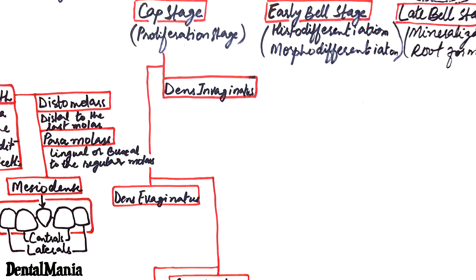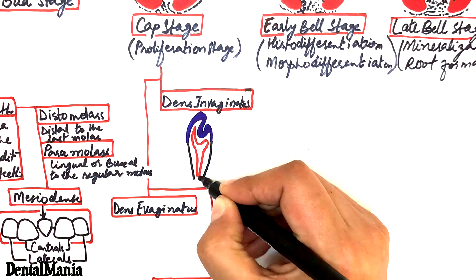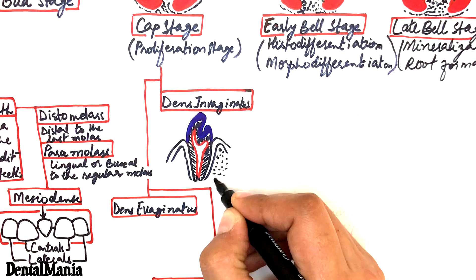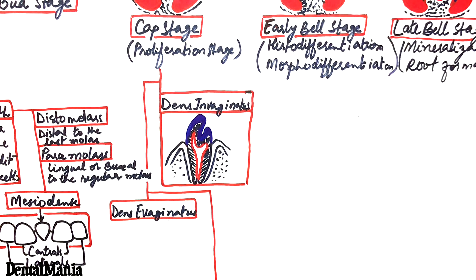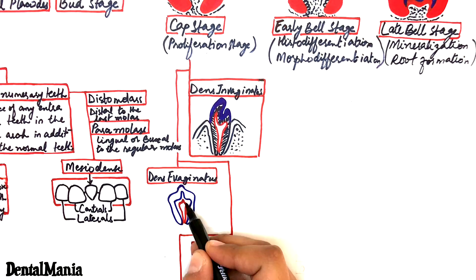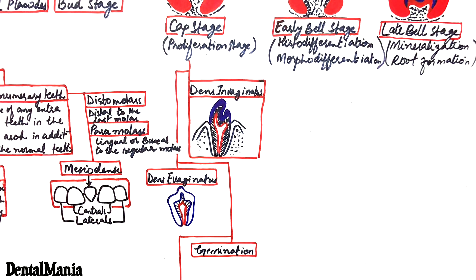The dens invaginatus or dens in dente refers to the presence of a tooth within a tooth. It occurs as a result of infolding or invagination of the enamel organ into the dental papilla. Dens evaginatus is a rare developmental anomaly characterized by presence of an extra cusp arising from occlusal or lingual surfaces.